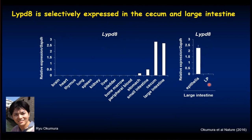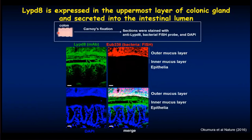Thus, LYPD-8 is selectively expressed in the epithelial cells of the cecum and large intestine. He decided to analyze the function of this molecule, generated a monoclonal antibody against LYPD-8, and analyzed protein expression. LYPD-8 was found to be highly expressed in the uppermost layer of the colonic gland, and further, this molecule was found to be secreted into the intestinal lumen.